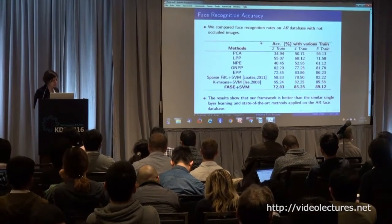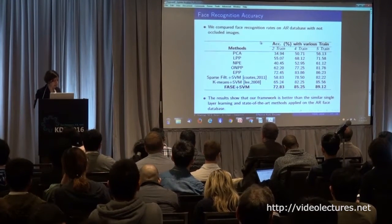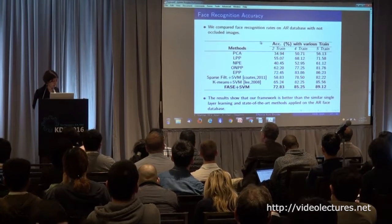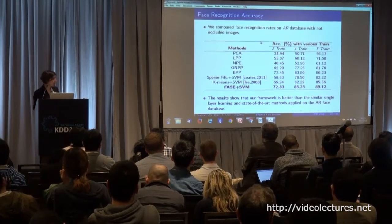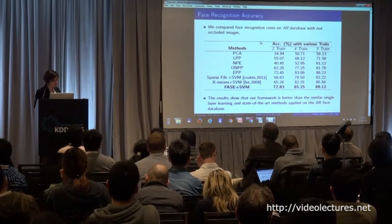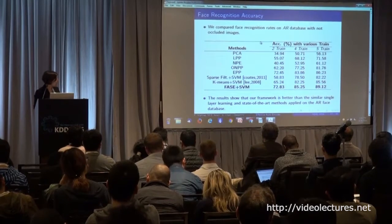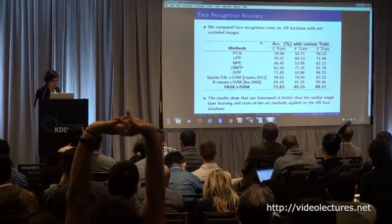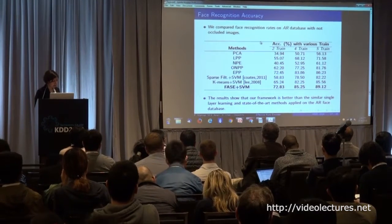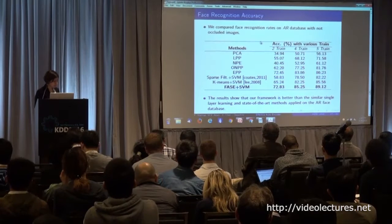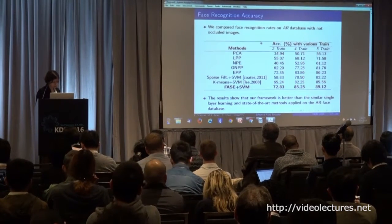Besides classification, we compared the recognition rate of this algorithm with other algorithms on the AR database. Using SVM alongside the FASE module, for example after five training samples, we achieved an accuracy of 89.12%, which shows this algorithm is better than similar single-layer learning methods, and also runs faster on this database.